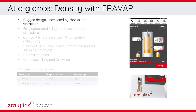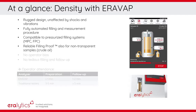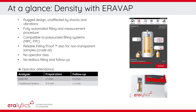AeroLytics' unique density module DENS4052 features a rugged design and is unaffected by shocks and vibrations, making it ideal for field use or mobile applications. Both the filling and measurement procedure are fully automatic and compatible with a pressurized filling system such as an MPC or FPC. By applying AeroLytics filling proof, the density is measured reliably, even for non-transparent sample types. Due to the automatic procedure, any operator bias is eliminated and no tedious filling and follow-up is necessary. The operator attendance is reduced to approximately 3 minutes per measurement in total.